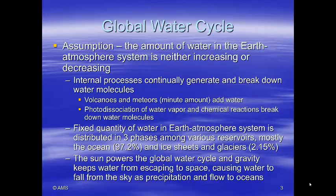We're going to start with a huge assumption: the amount of water in the Earth-atmosphere system is neither increasing nor decreasing. Volcanoes and meteors add water to the system, and photodissociation of water vapor and chemical reactions break down the water molecules, but essentially it's relatively constant.